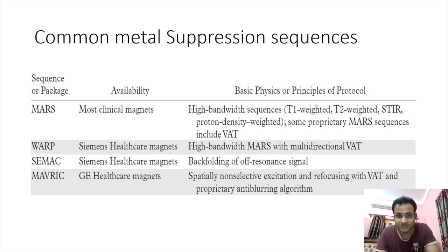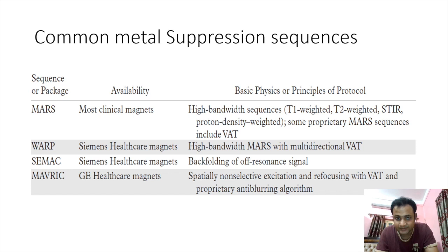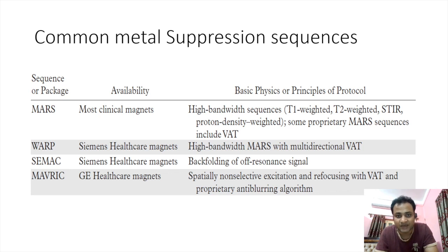Common metal suppression sequences by vendor: MARS is the most commonly used clinical sequence; WARP and SEMAC are used by Siemens; MAVERICK is used by GE. In tabular format: WARP uses high bandwidth; SEMAC uses back-folding of the off-resonance signal; MAVERICK uses partially non-selective excitation.